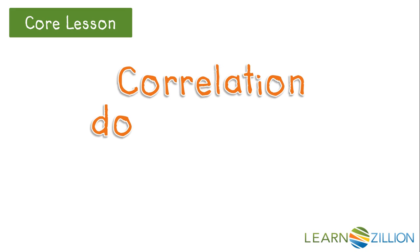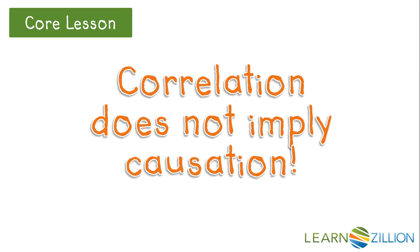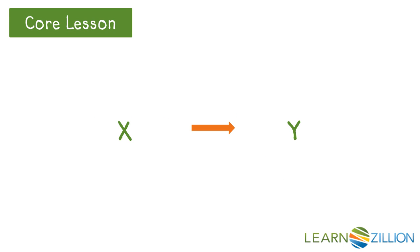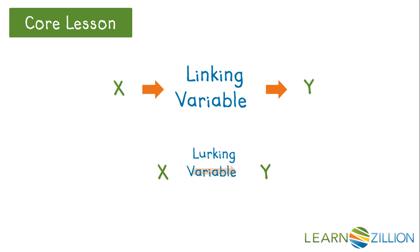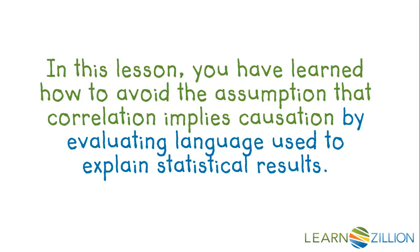Remember that correlation does not imply causation. If x is correlated with y, it might be the case that x causes y, and it could also be the case that y causes x. Two other scenarios consistent with the correlation between x and y are: first, there might be a linking variable that acts between x and y; and second, a lurking variable could be acting in the background causing the changes in both x and y, making it appear as though one of these variables is causing a change in the other. In this lesson, you have learned how to avoid the assumption that correlation implies causation by evaluating language used to explain statistical results.